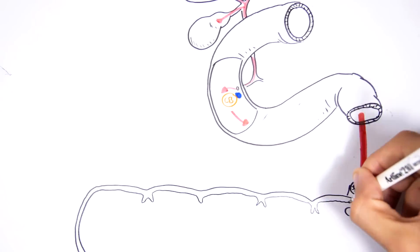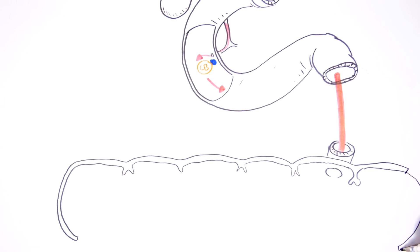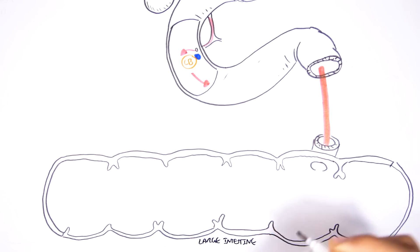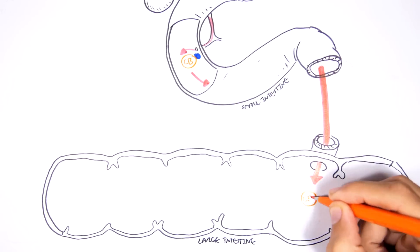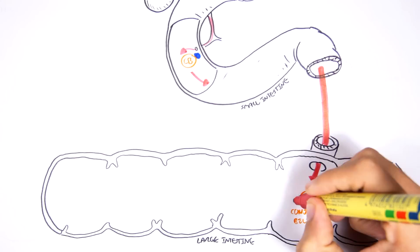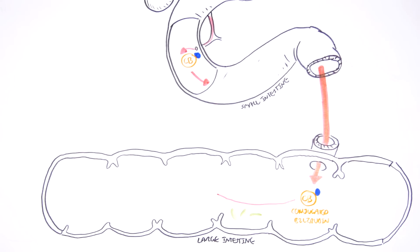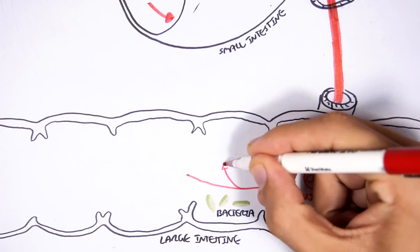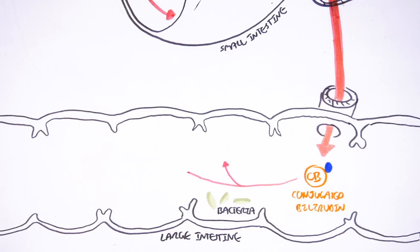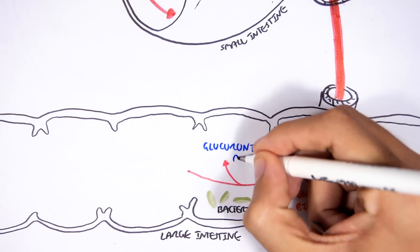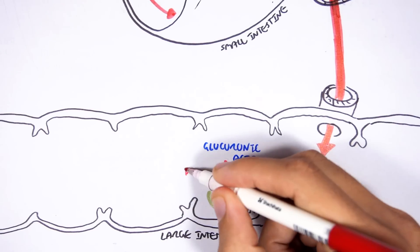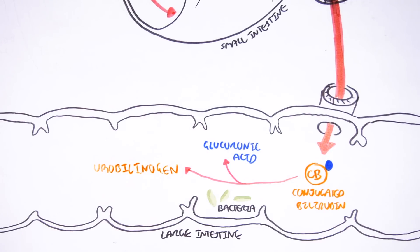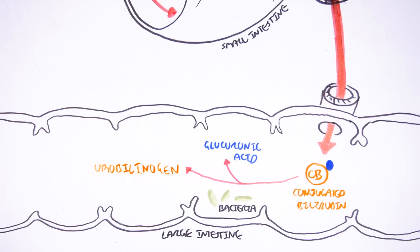Now towards the end of the small intestine, a section known as the ileum, or in the beginning of the large intestine, the conjugated bilirubin will be converted by the intestinal bacteria to urobilinogen by removing the glucuronic acid through a hydrolysis reduction reaction. Urobilinogen is once again lipid-soluble.